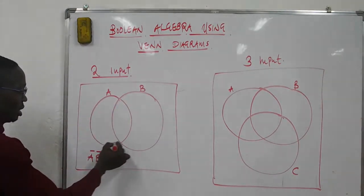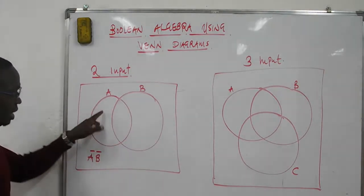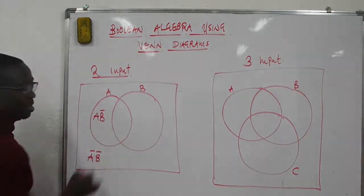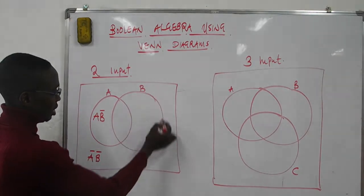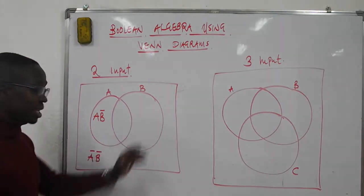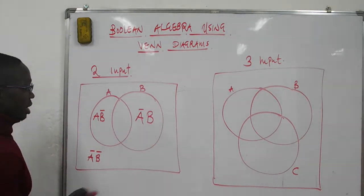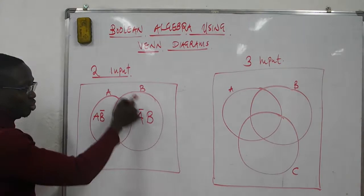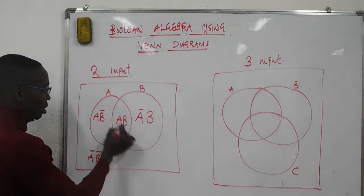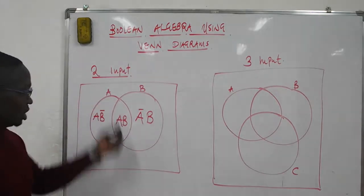When we come to this region here, this is a region where A appears but B does not appear, so it is given by A, B bar. When we come to this region here, this region is where B appears but A does not appear — so this region is A bar, B. For the two input diagram, these are the possible set combinations you can have.